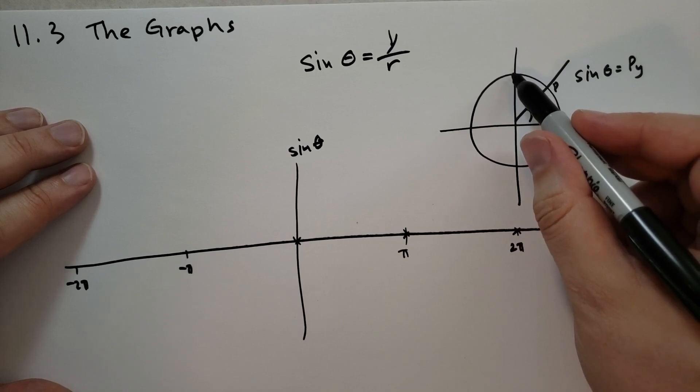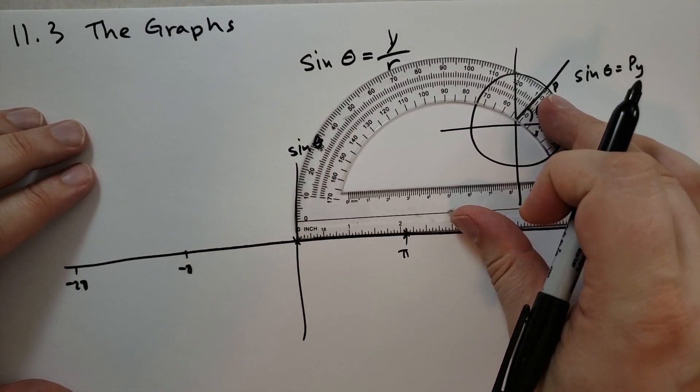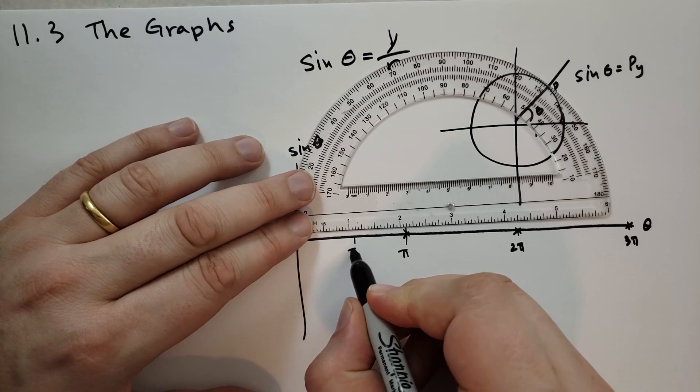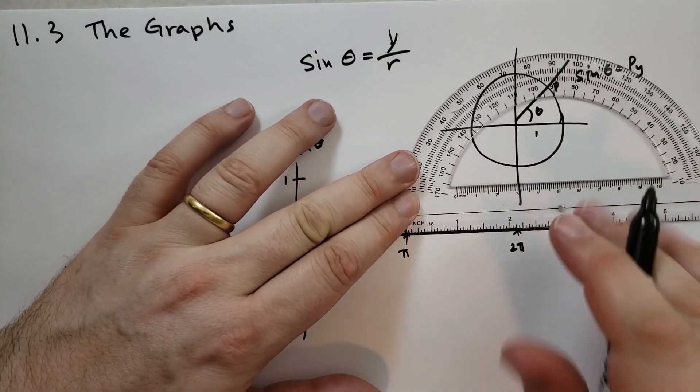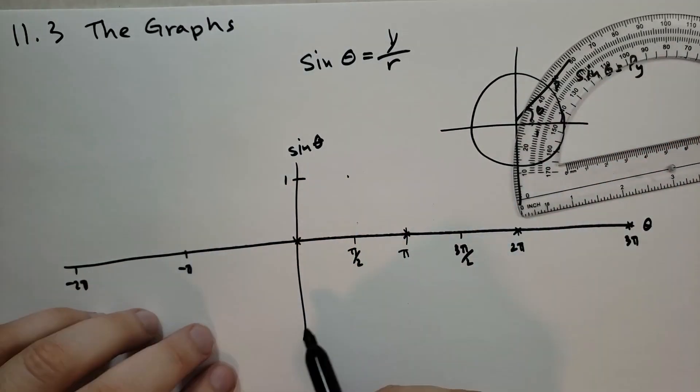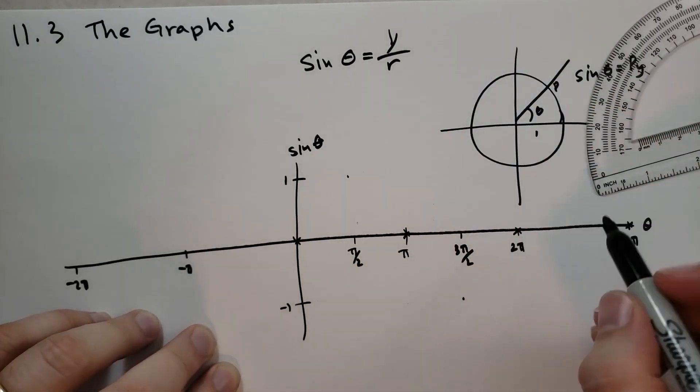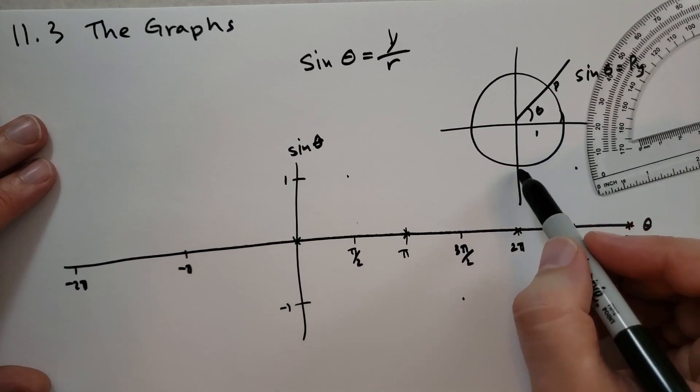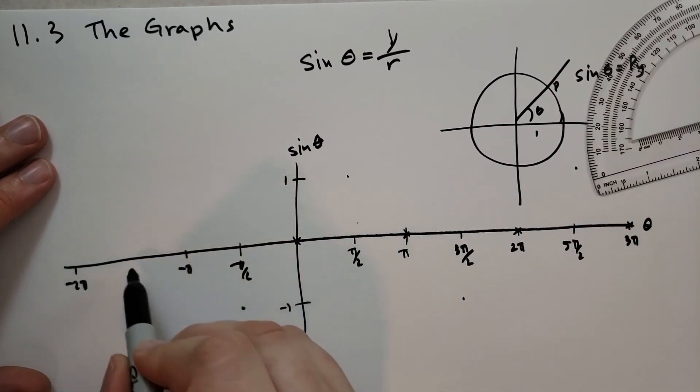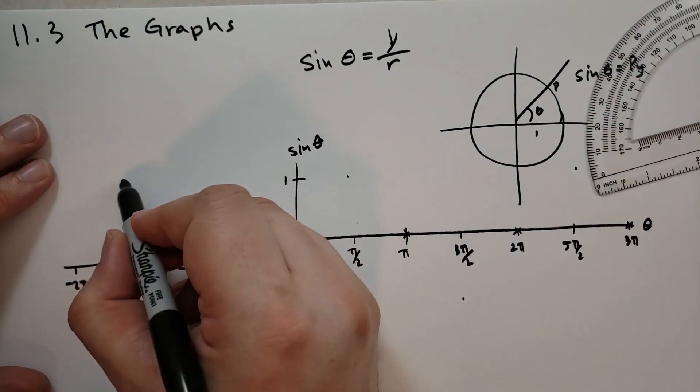The next thing we notice is that at pi over 2 and 3 pi over 2, at pi over 2, it's going to be 1. This is one of the points there. At 3 pi over 2, it's going to go down to minus 1. And then at 5 pi over 2, it's going to go back up to 1. When we go to minus pi over 2, that's going to be minus 1. And then minus 3 pi over 2, that's going to be a plus 1.